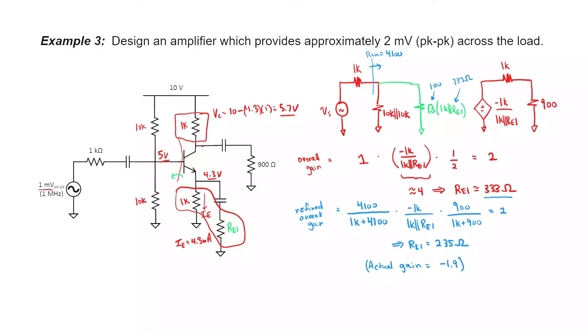These are just estimates, and normally when you're designing an amplifier, you should always over-design — make the gain a little bit more than what you would ever need. I'm now going to choose my capacitor values. Since it's a 1 MHz signal in the radio range, capacitors in the nanofarad range are usually safe. I'll pick 1 nanofarad at the input and 10 nanofarads at the output, because 900 ohms is smaller than my input impedance on the other side. And I'll also pick 10 nanofarads for the emitter bypass.